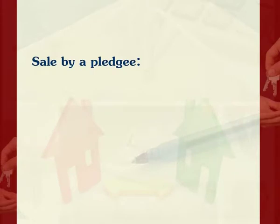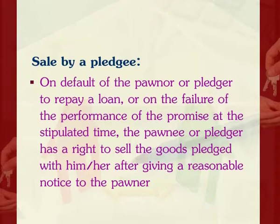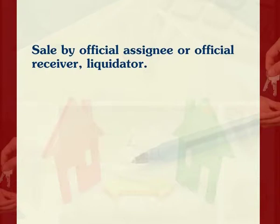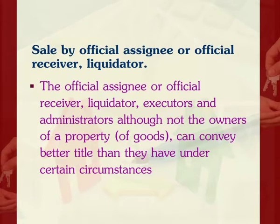Exception 9: Sale by a pledgee. On default of the pledgor to repay a loan or on failure of performance of the promise at the stipulated time, the pledgee has the right to sell the pledged goods after giving reasonable notice to the pledgor. In such case, the pledgee, even though not the owner, can sell the goods and convey a good title to the buyer. Exception 10: Sale by official assignee, official receiver, or liquidator. The official assignee, official receiver, liquidator, executors, and administrators, although not the owners of a property or goods, can convey a better title than they have under certain circumstances.